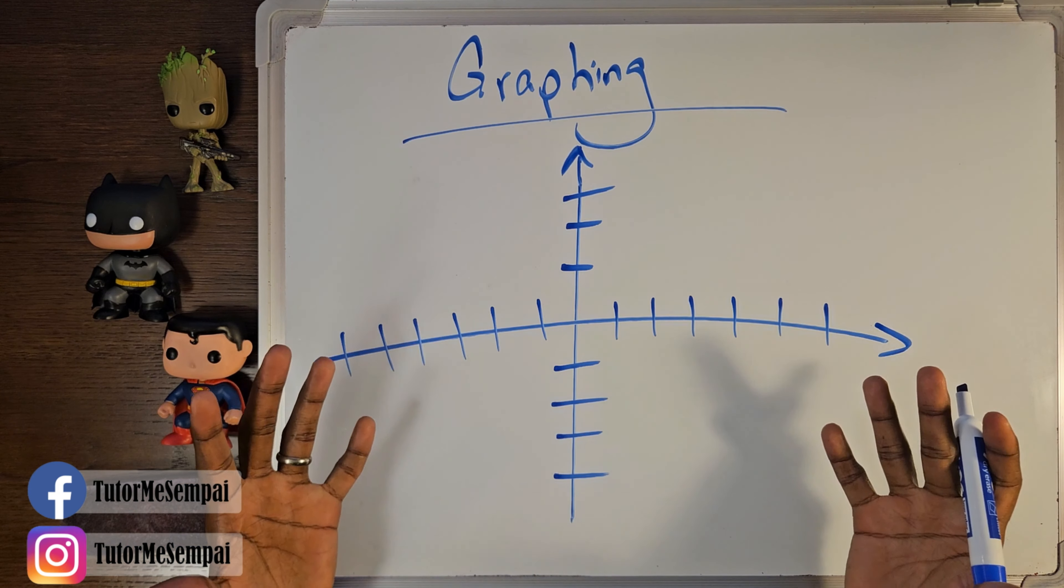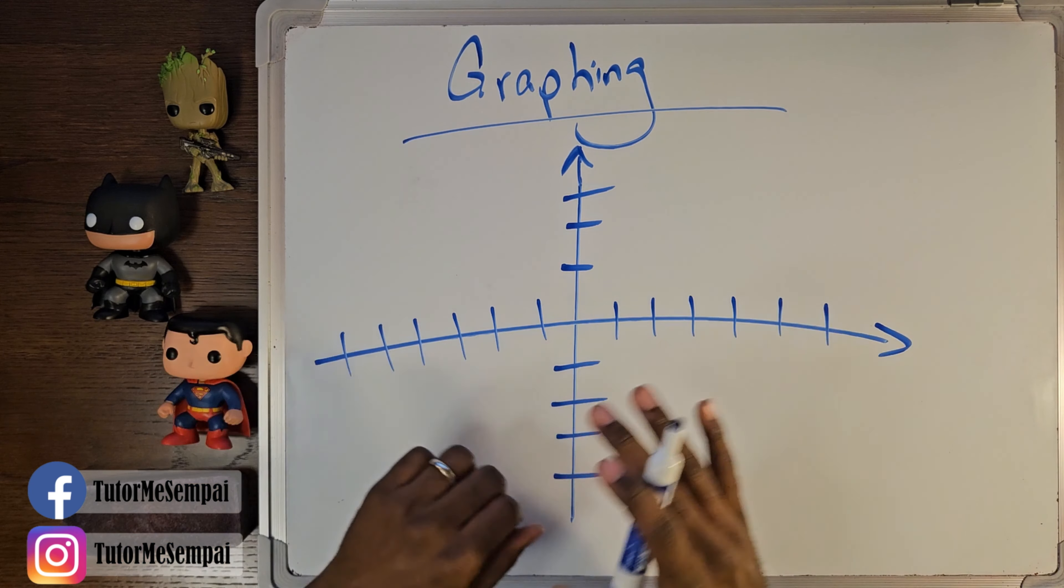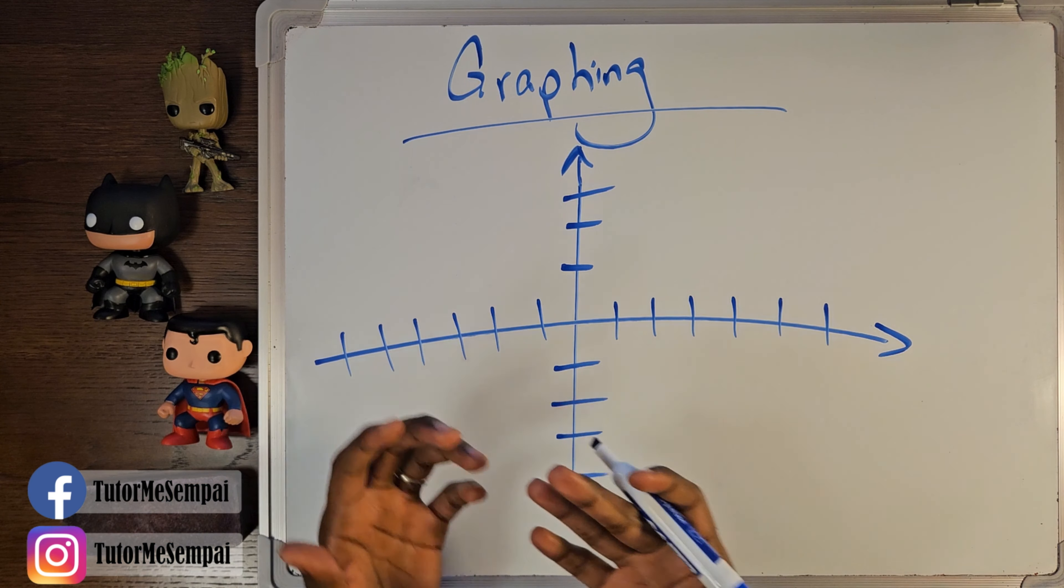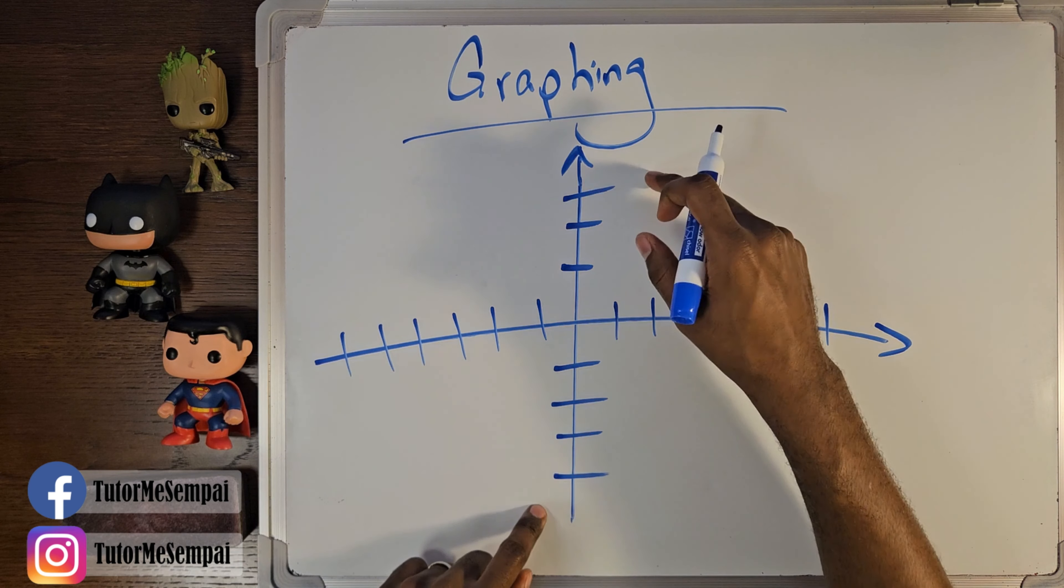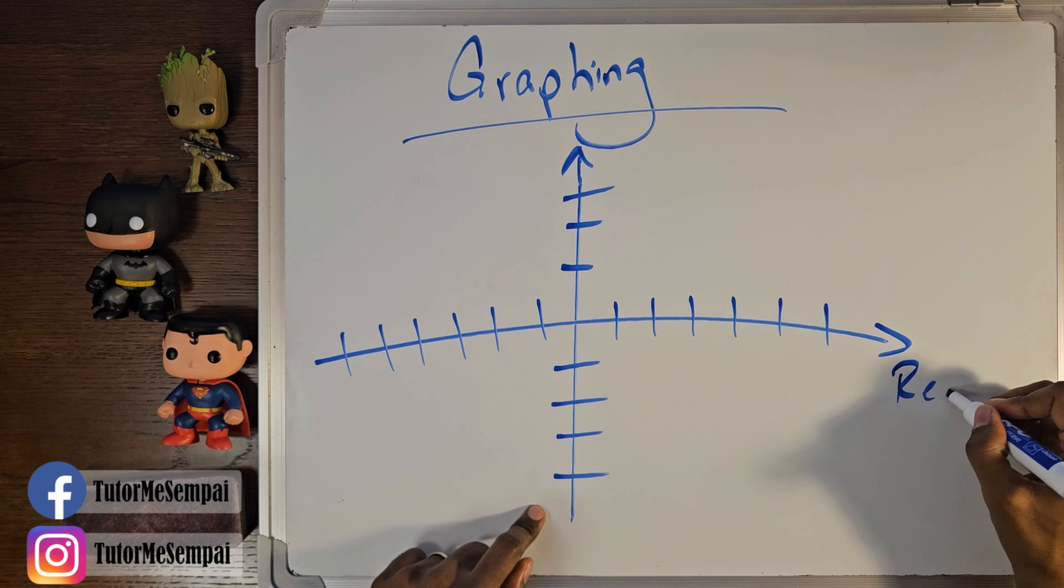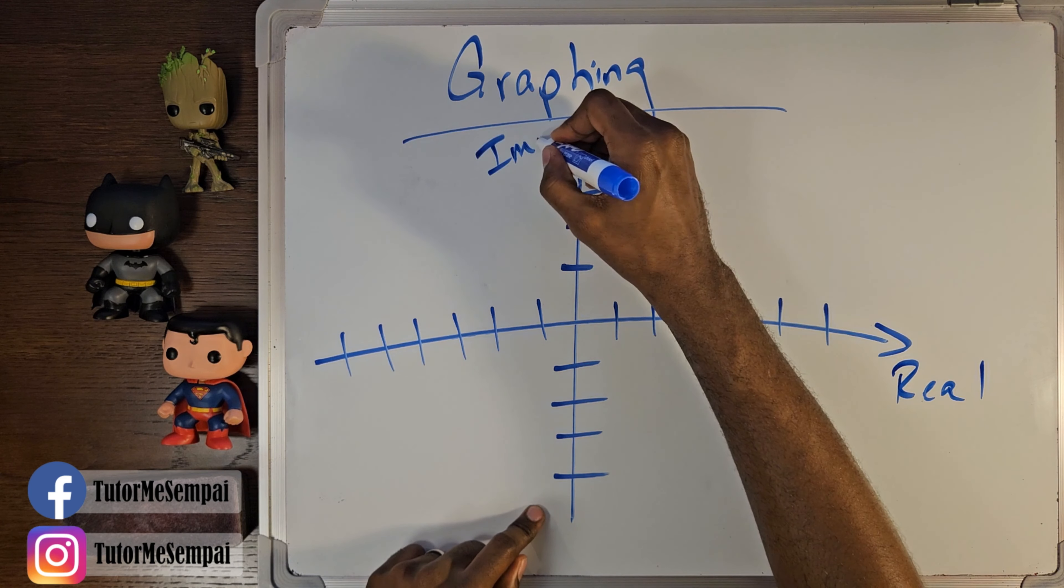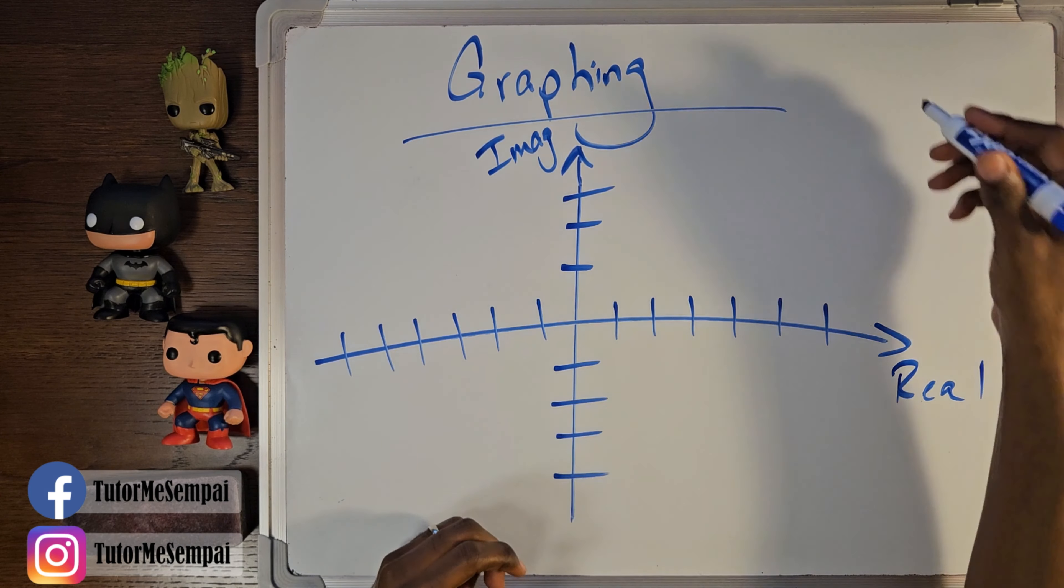Now, graphing complex numbers will actually be very simple, and that's because you're going to be doing the same exact thing that you always did. When you graph your x and y coordinates, the main difference is instead of having an x axis and a y axis, you're going to have a real axis and you're going to have an imaginary axis. But you're going to handle this the same exact way.